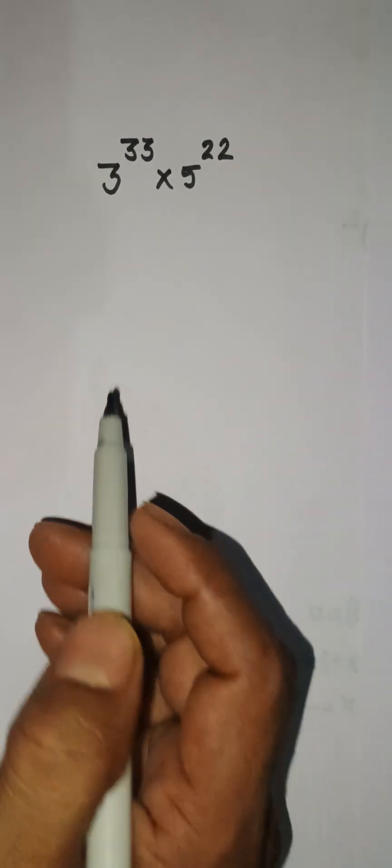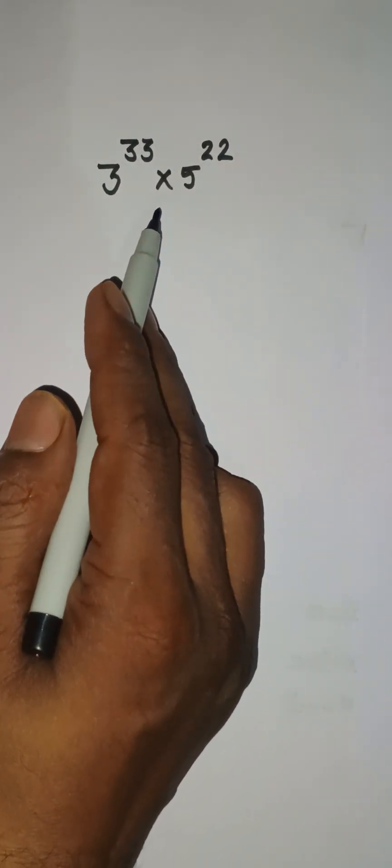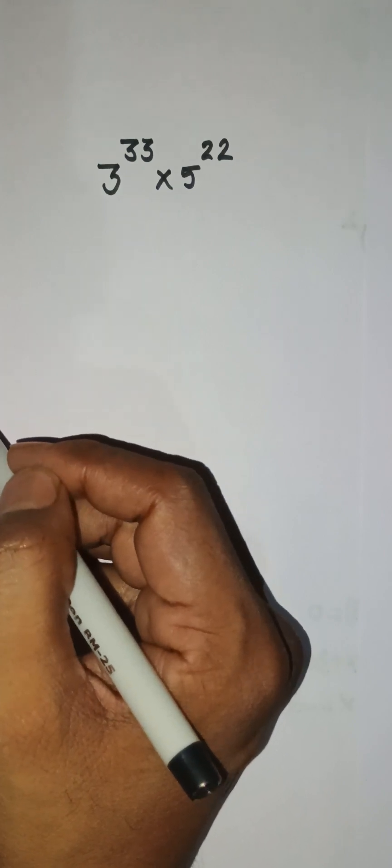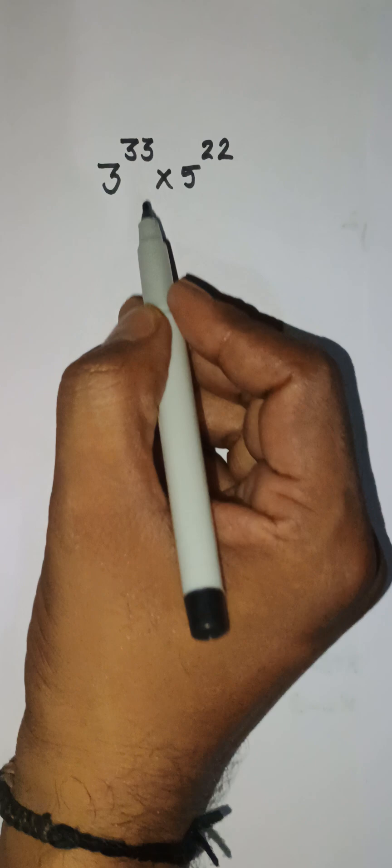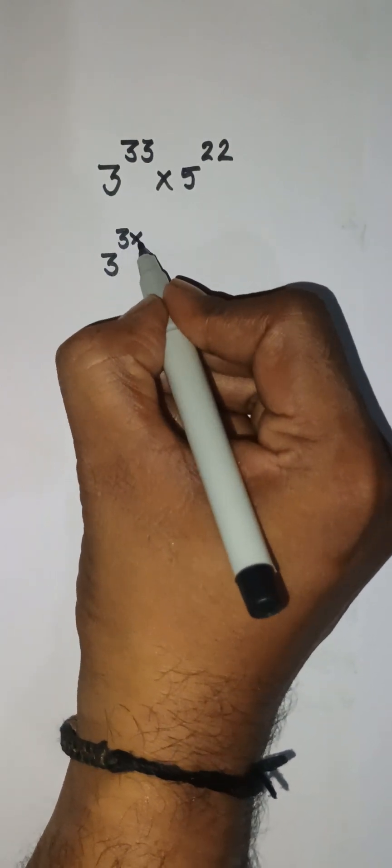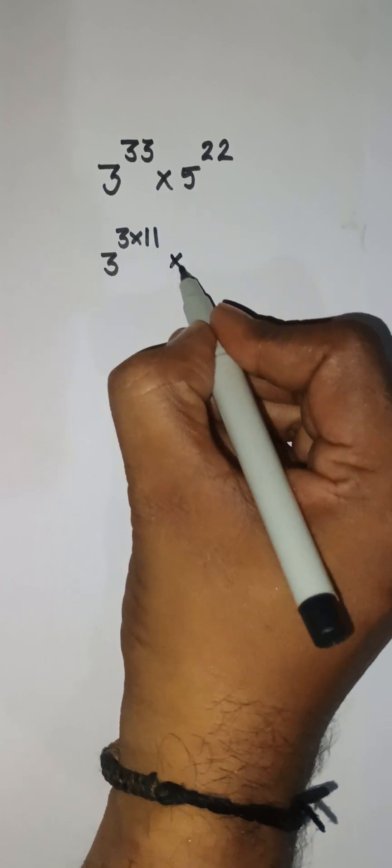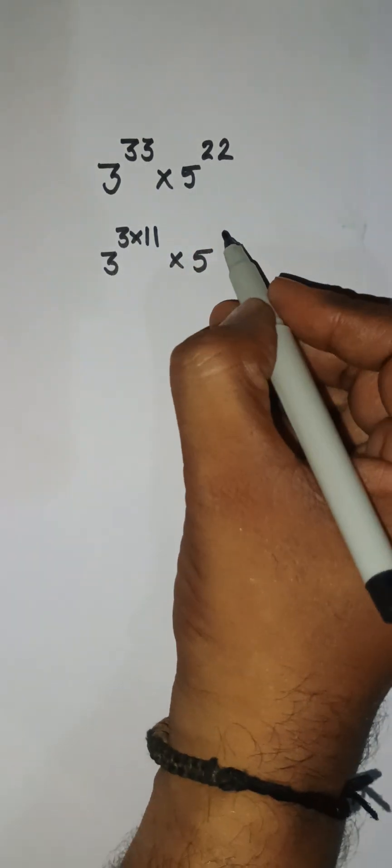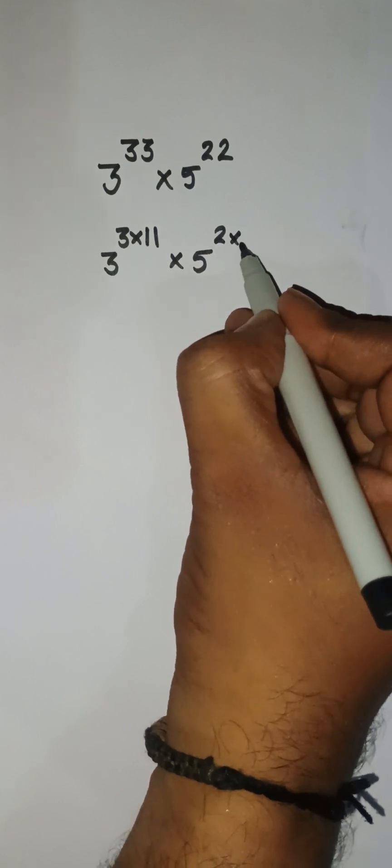Hello everyone, we have this problem: 3 to the power 33 multiplied by 5 to the power 22. How can we solve this problem? Let's solve here. 3 to the power 33 can be written as 3 to the power of 3 times 11. And 5 to the power 22—22 is the product of 2 and 11, so 2 times 11.